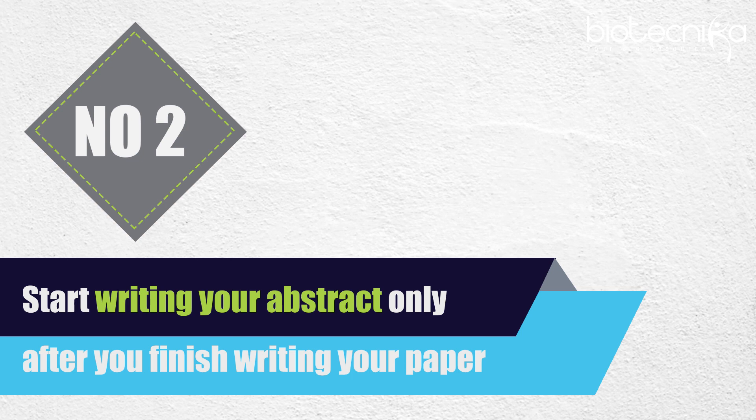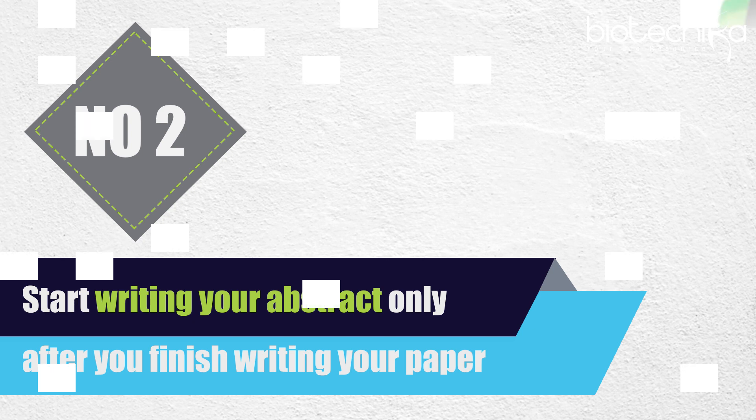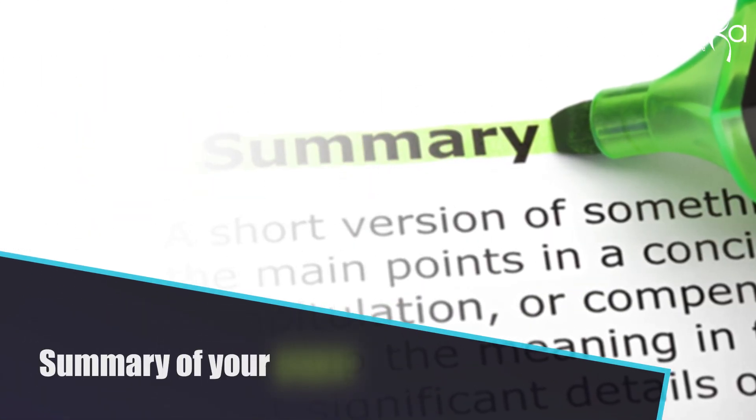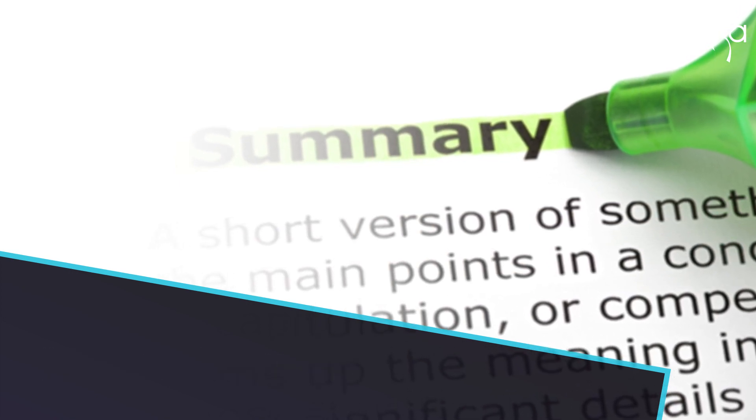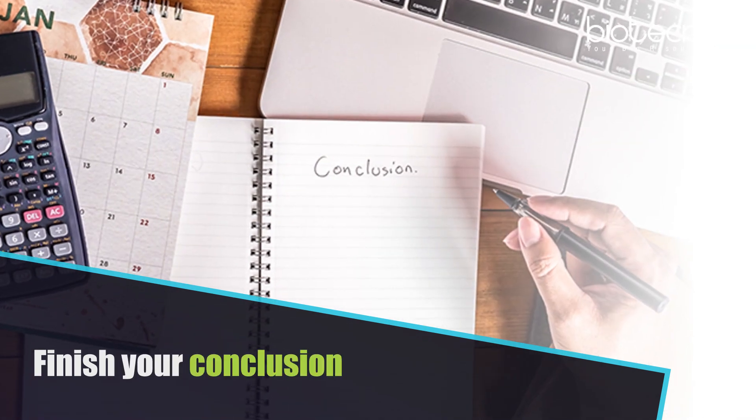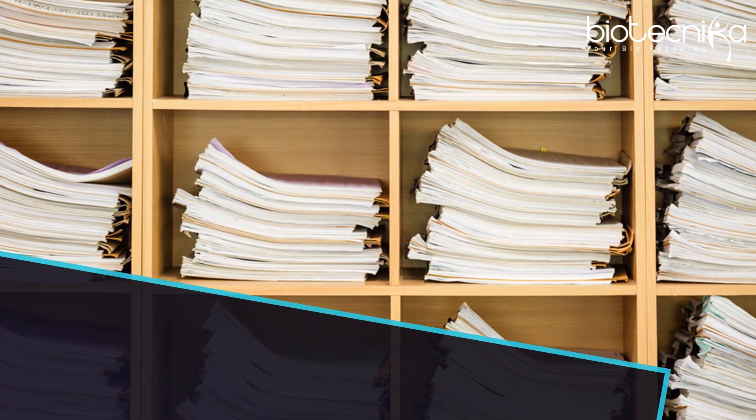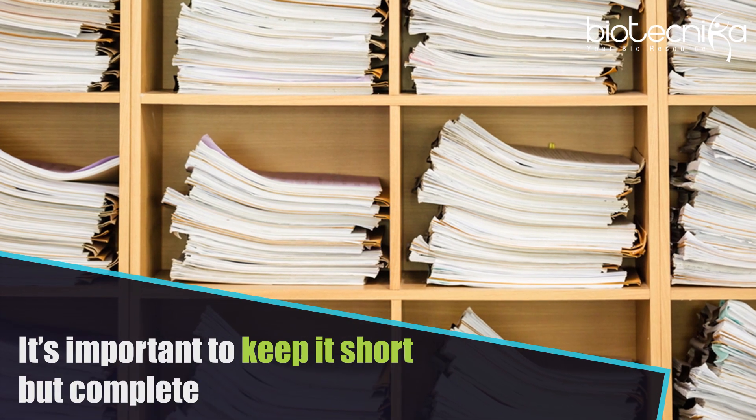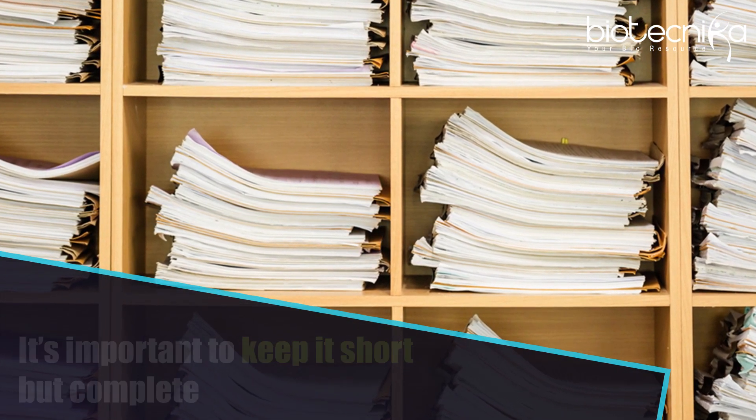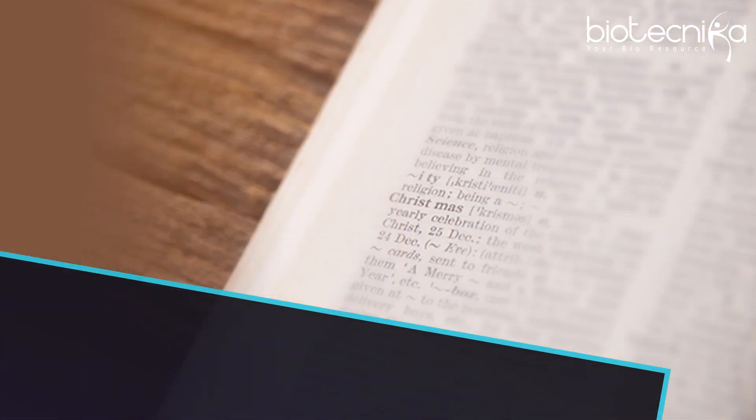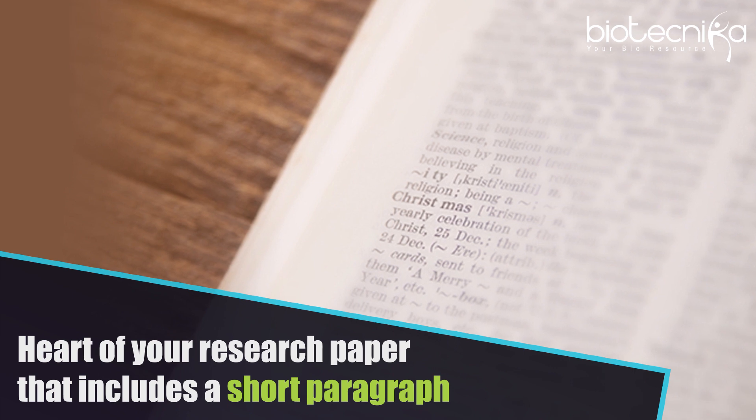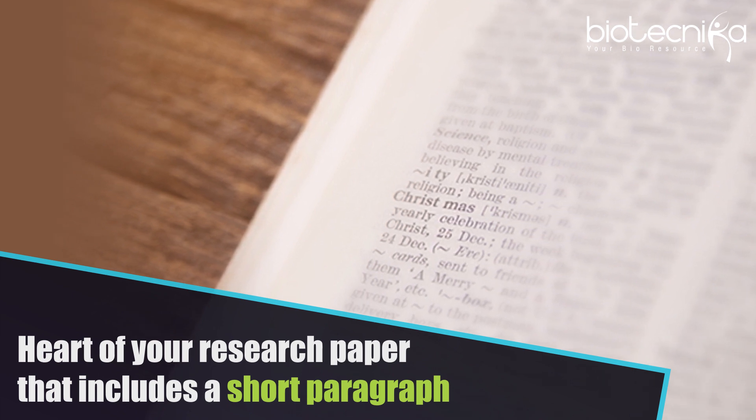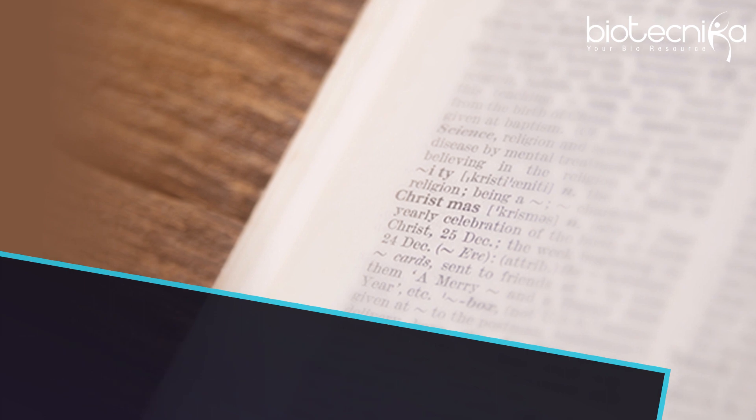Start writing your abstract only after you finish writing your paper. The abstract contains a summary of your paper, which is why it's easier to write it after you finish your conclusion. For a better abstract, it's important to keep it short but complete. Your abstract should contain the heart of your research paper. That includes a short paragraph about your research problem, research method and your conclusion.